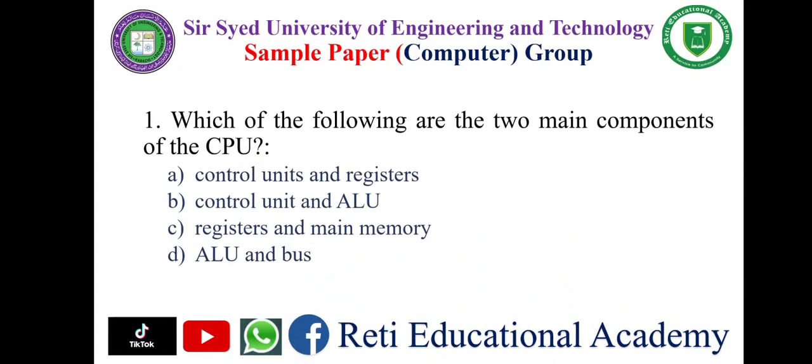Question number one: Which of the following are the two main components of the CPU? A) Control unit and registers, B) Control unit and ALU, C) Registers and main memory, D) ALU and bus. The correct answer is B: Control unit and ALU.